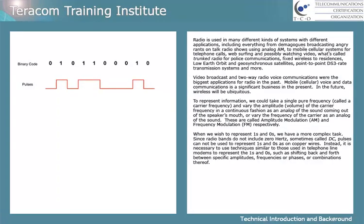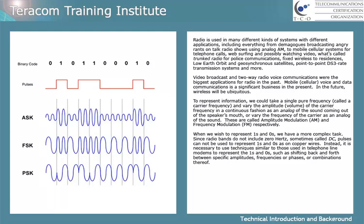When we want to represent ones and zeros, we have a more complex task. Since radio bands don't include zero hertz — sometimes called DC — pulses cannot be used to represent ones and zeros as they are on copper wires. Instead, it's necessary to use techniques similar to those used in telephone line modems to represent the ones and zeros, such as picking a frequency and shifting back and forth between specific amplitudes, specific frequencies, or phases, or combinations thereof.